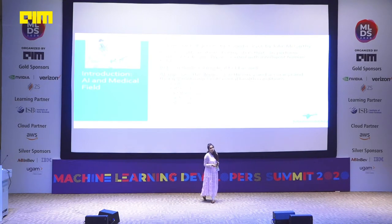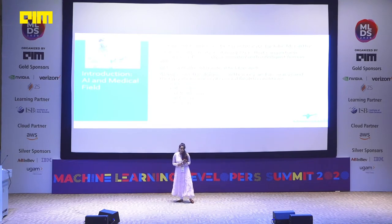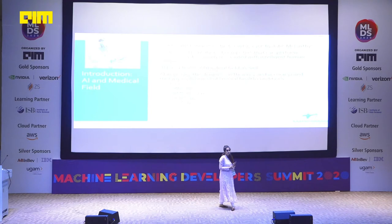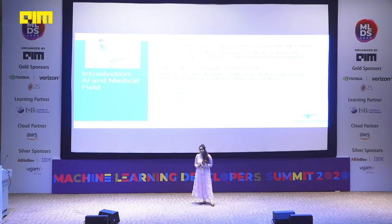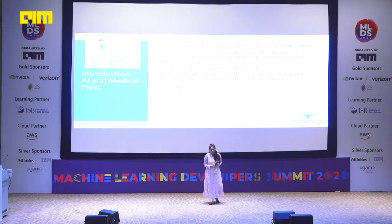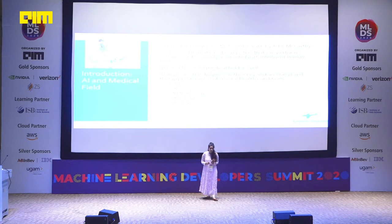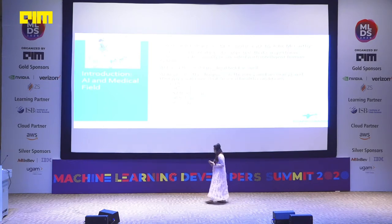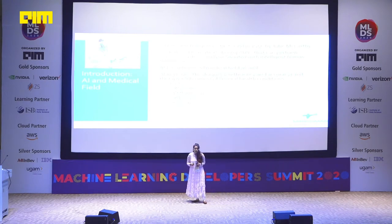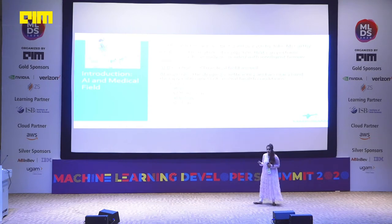AI improves diagnosis in terms of efficiency and accuracy. How do we calculate the performance of AI? In terms of sensitivity, specificity, positive prediction value, and negative prediction value — we'll see how we calculate those values in coming slides. In healthcare, there are many areas wherein artificial intelligence has taken its place: radiology, pathology, ophthalmology, cardiology, and oncology, just to name a few. Here we'll be discussing how artificial intelligence is working in the real world for cancer diagnosis.